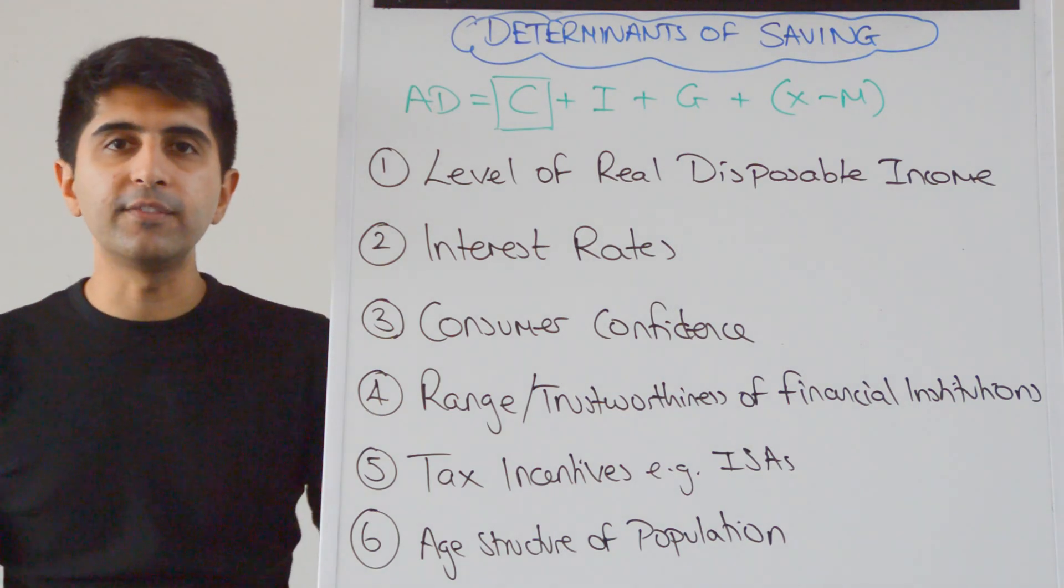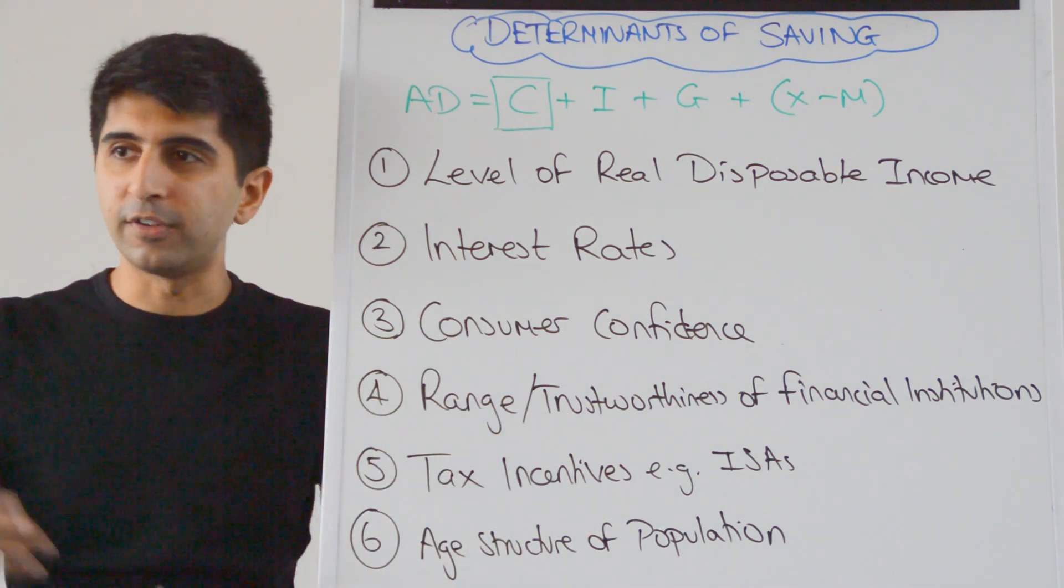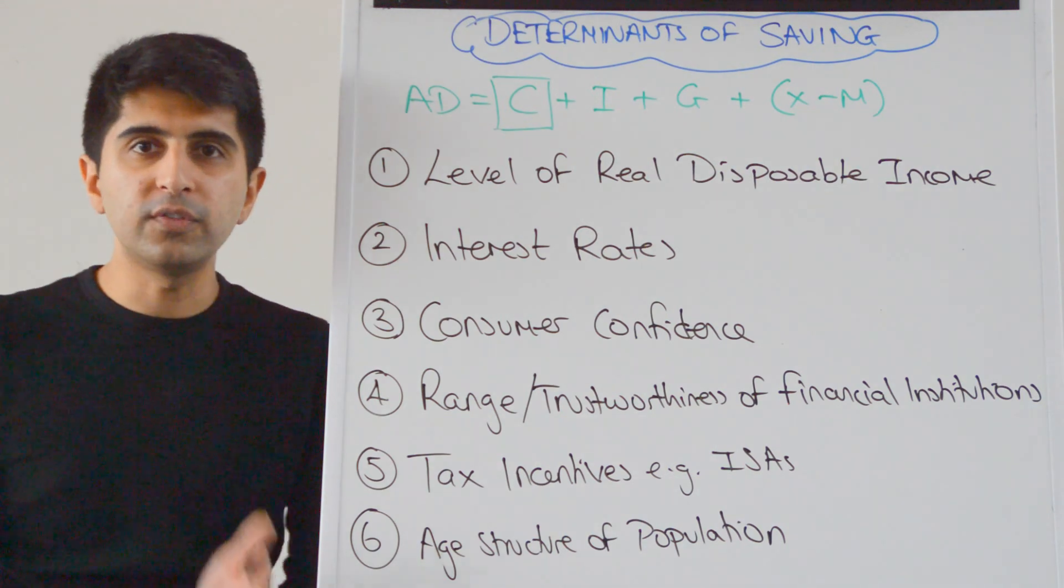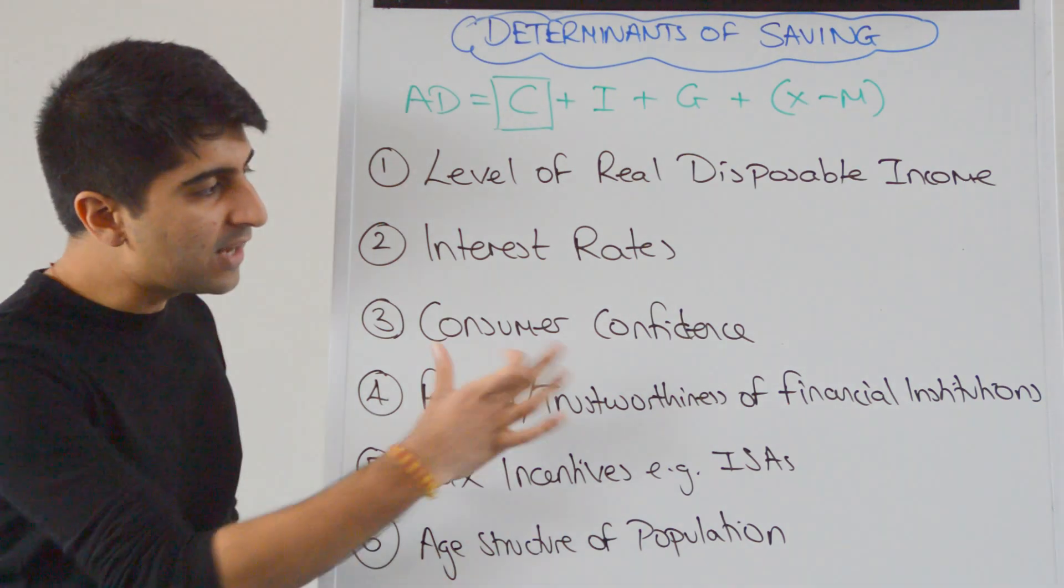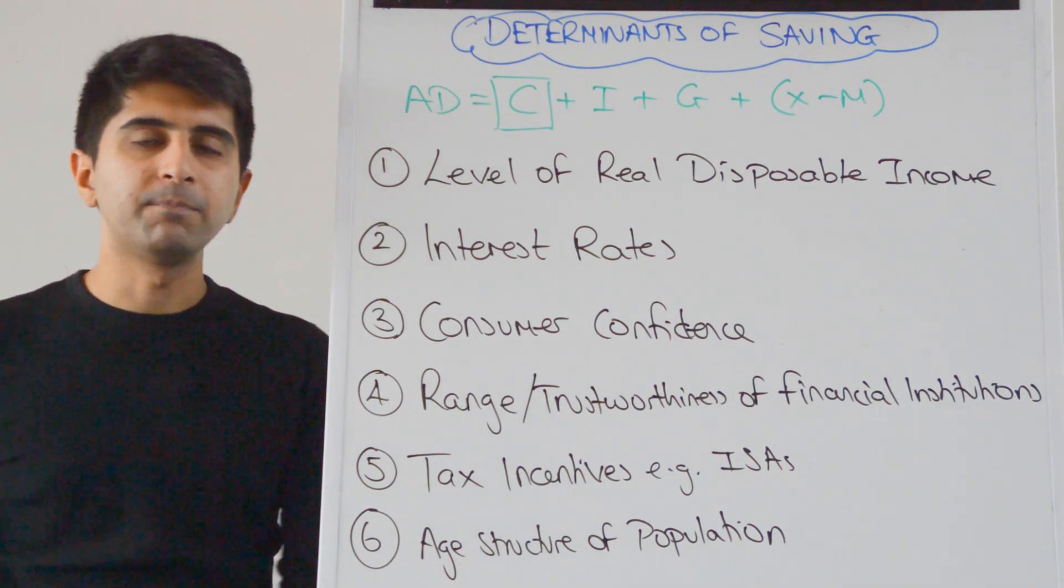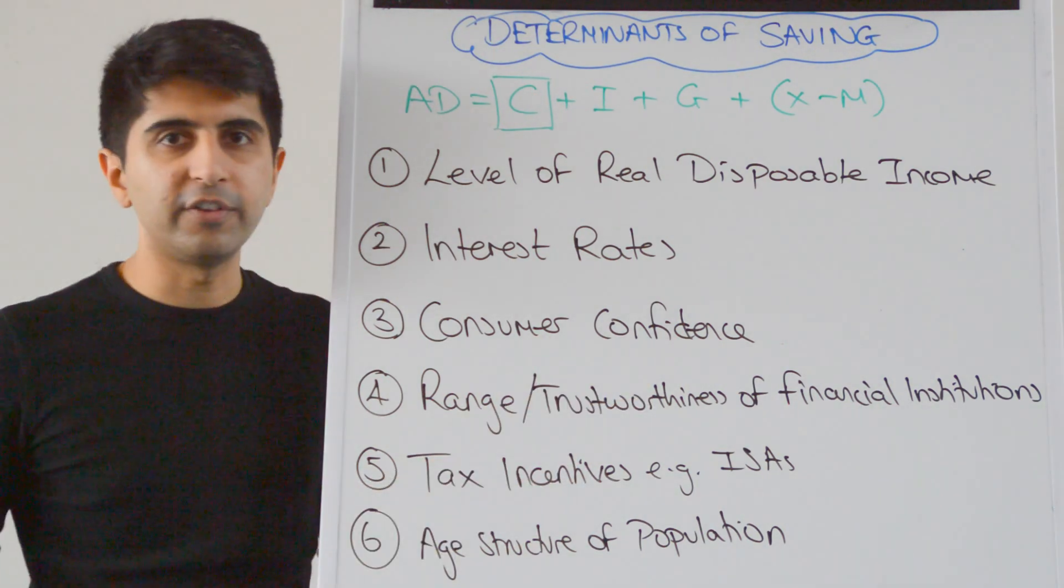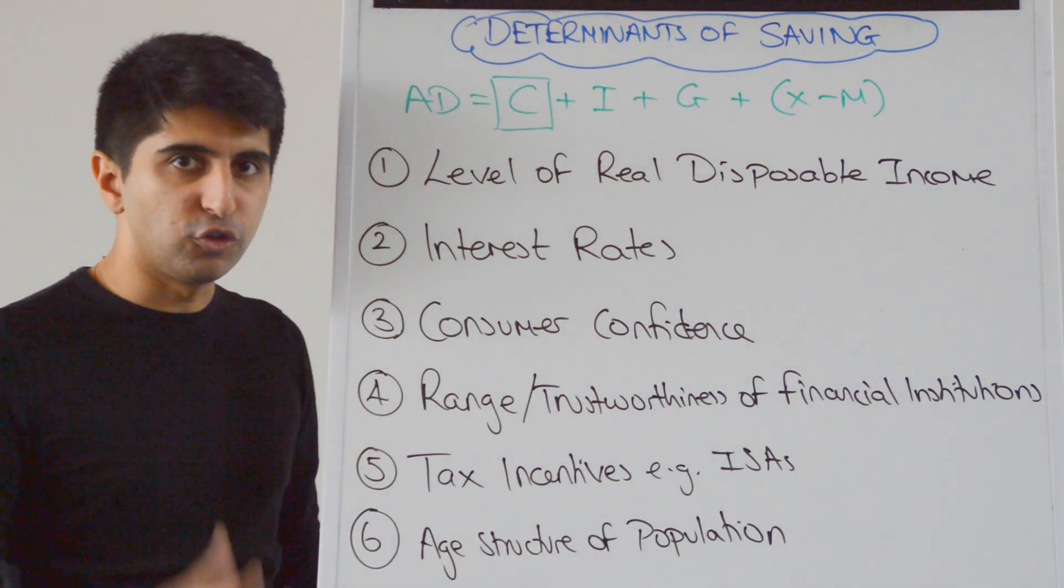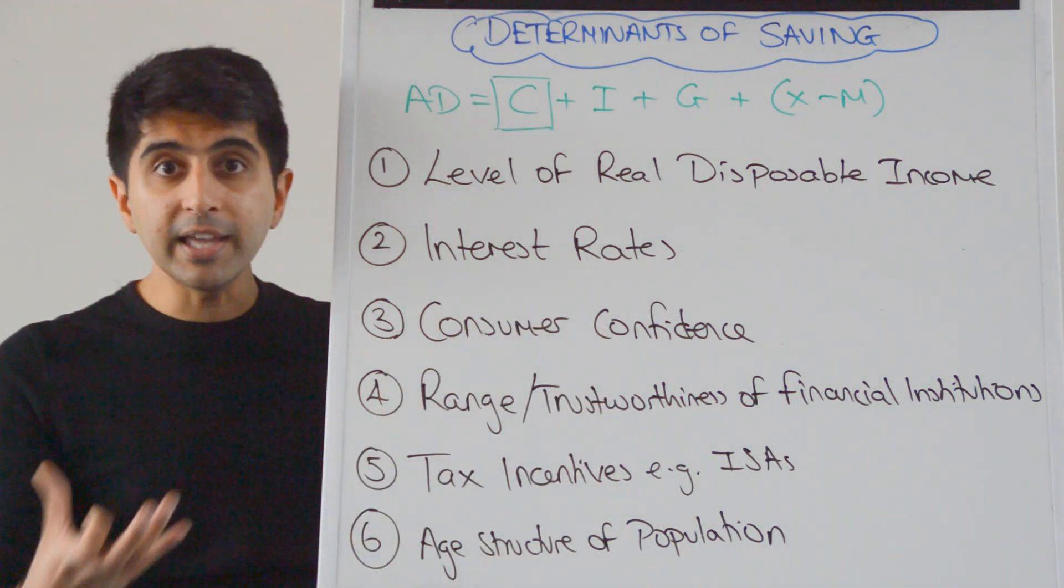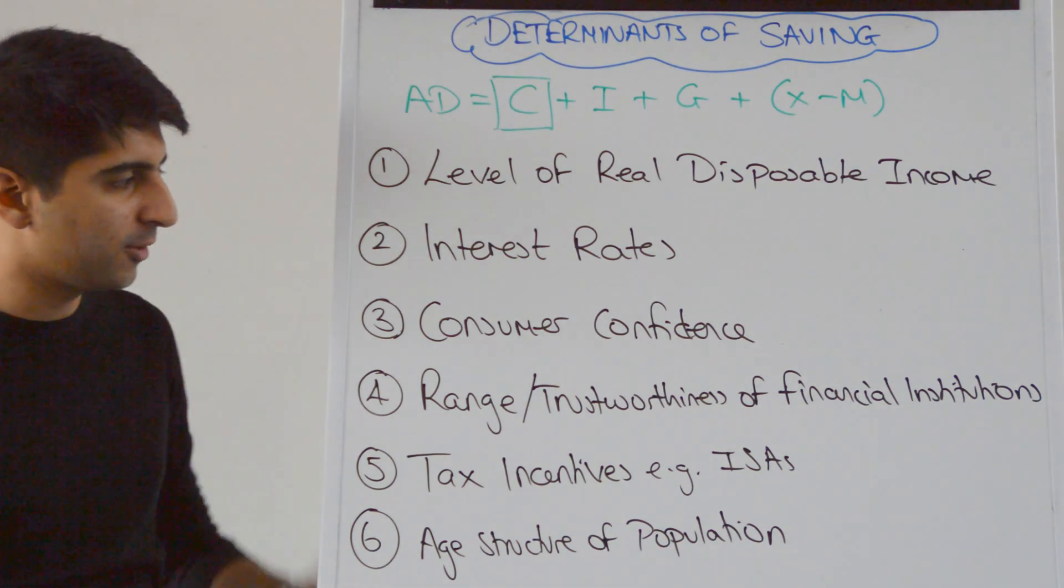The level of consumer confidence. If consumer confidence is very low in the economy because people fear a recession coming up, they fear losing their jobs or they think that their incomes are going to take a cut, then individuals are more likely to save money in preparation for that. So low consumer confidence encourages more saving and less consumer spending in the economy. Whereas if there is high consumer confidence that encourages more spending and less saving in the economy.